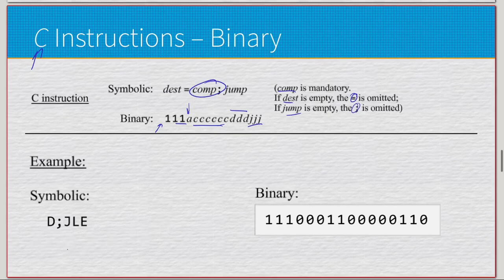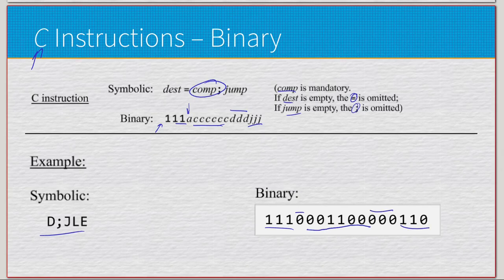If we look here, we have an example of symbolic being D semicolon JLE. And if I look at this, I can read that this is going to be 111. So, I know it's the C instruction. I know what this A bit does. I know what these next six bits do. One, two, three, four, five, six. Yep. And I know what these three, or these two sets of three bits do.